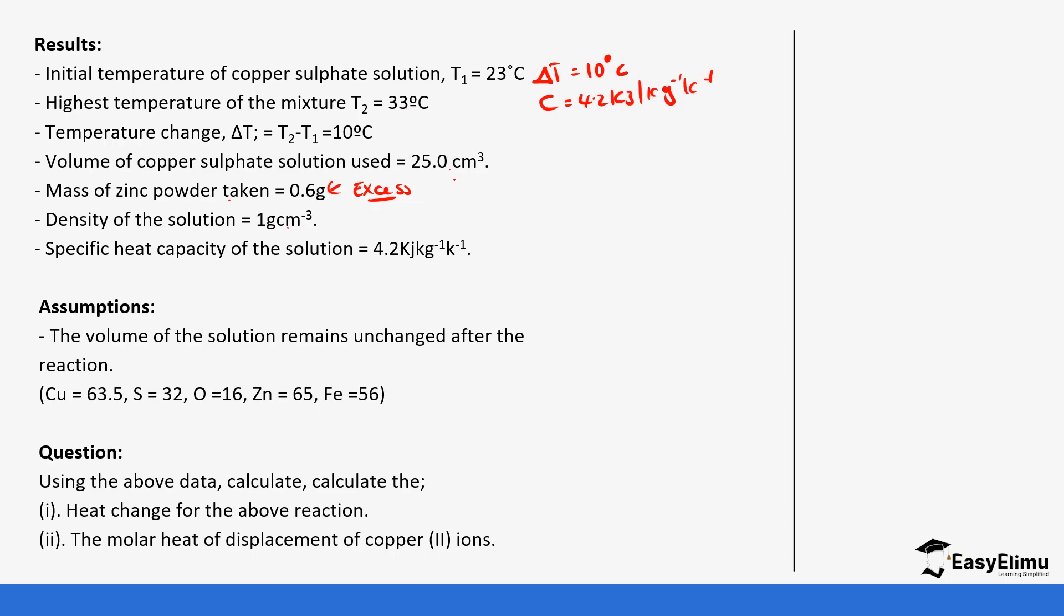So we also need the mass of the solution. So M is going to be 25 grams because we take the volume. But if we convert it into kilograms, it will be 25 divided by 1000, which forms 0.025 kilogram. So the volume of the solution remains unchanged after the reaction. That's why we still remain with 25 grams.